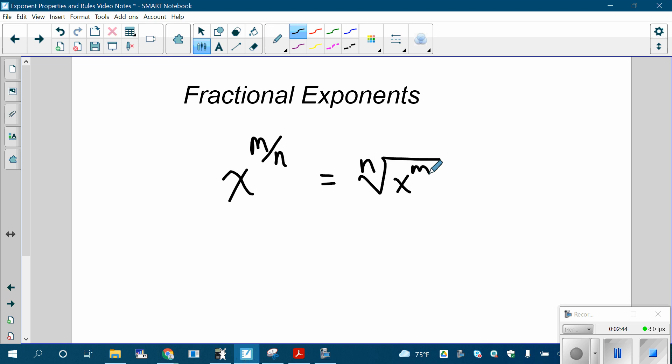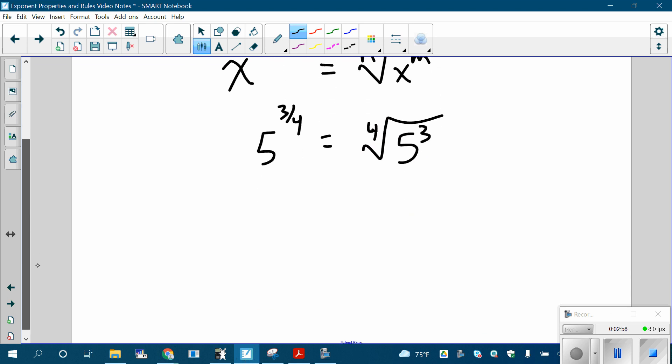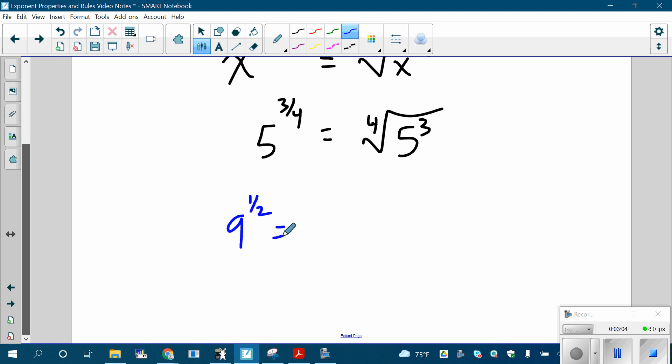For example, 5 to the 3/4 power, the way to calculate that or a way to rewrite that would be the fourth root of 5 cubed. We'll talk more about that, but what that means is if you have anything to the 1/2 power, it becomes the square root of that number.